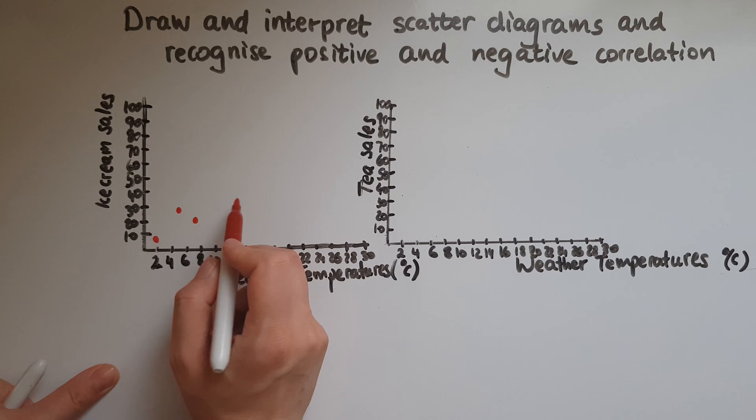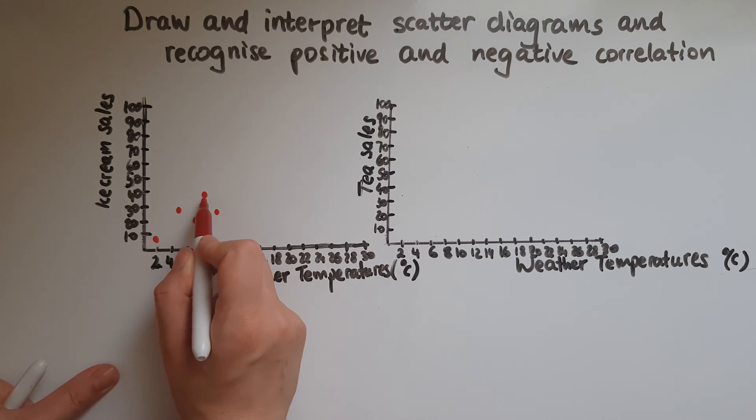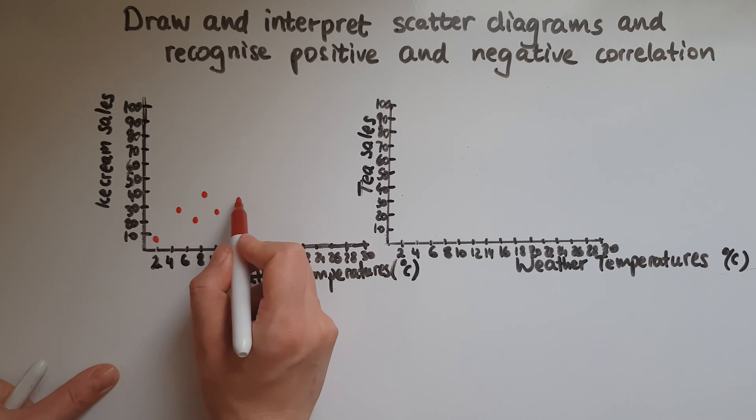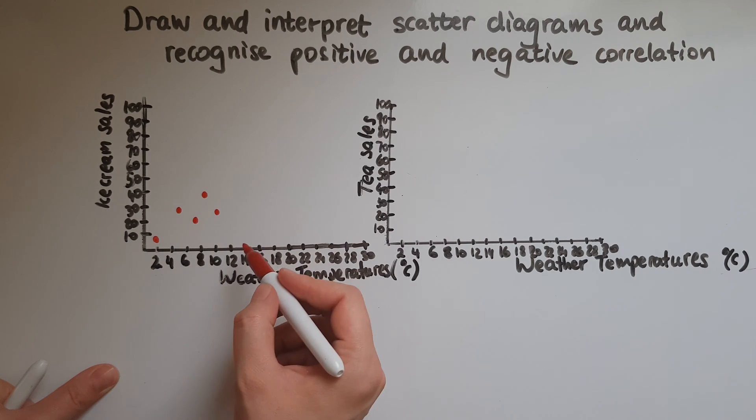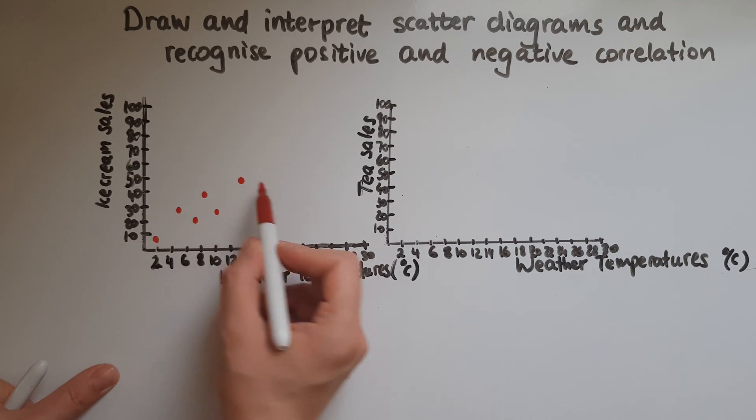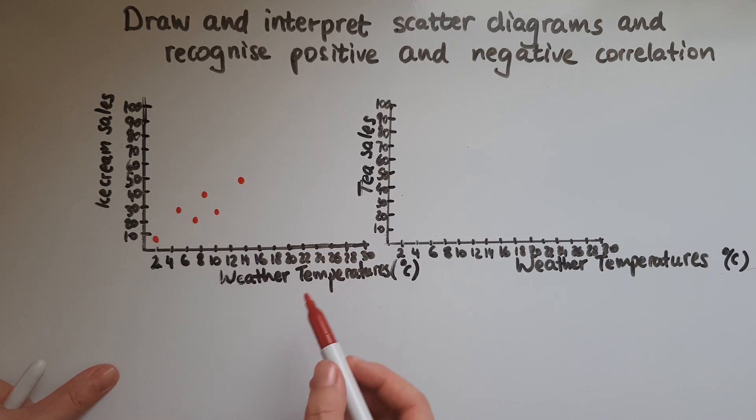So I'm gonna show that. So when the temperature is about 8 then perhaps 40 ice creams are sold. When the temperatures go up so do the ice cream sales, so maybe at 14 degrees 15 ice creams sold in a shop.